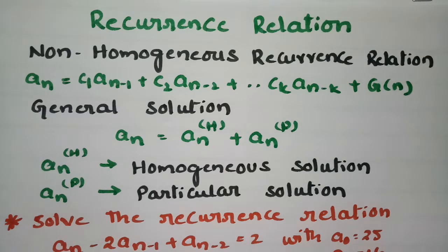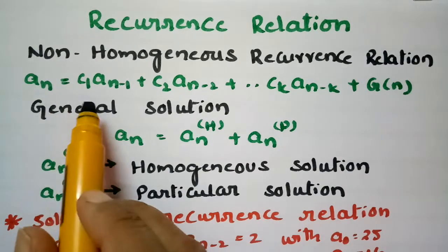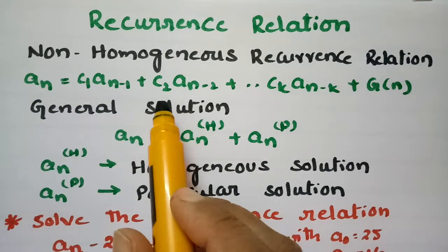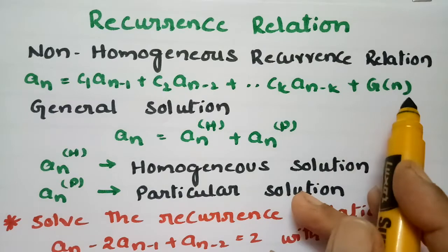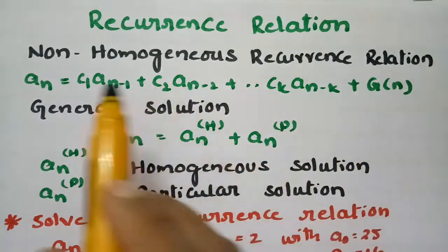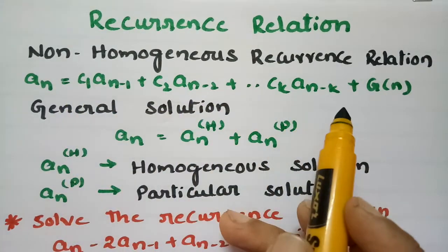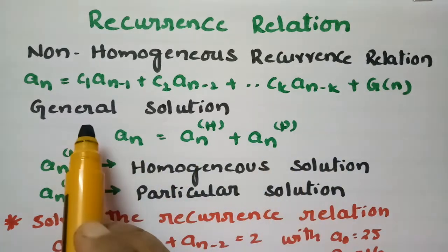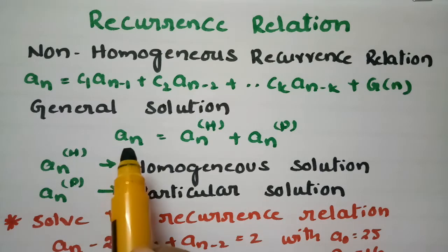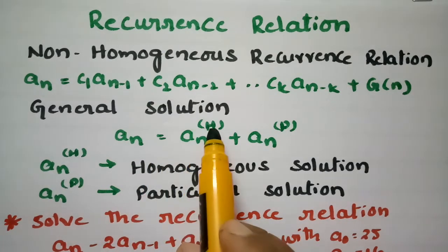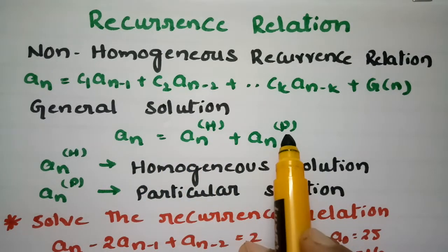In today's video I am going to explain what is a non-homogeneous recurrence relation. Any equation of the form a_n = c1·a_{n-1} + c2·a_{n-2} + ... + ck·a_{n-k} + g(n), where c1, c2, ..., ck are constants, is called a non-homogeneous recurrence relation. The general solution is a_n = a_n^(h) + a_n^(p).